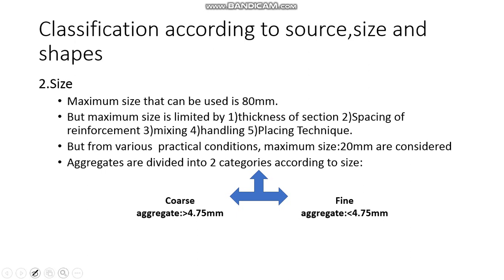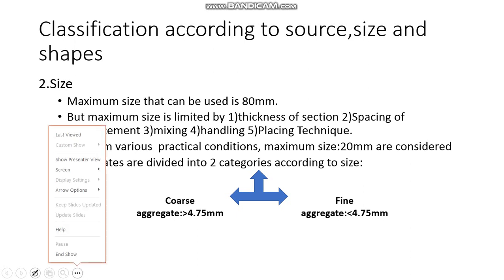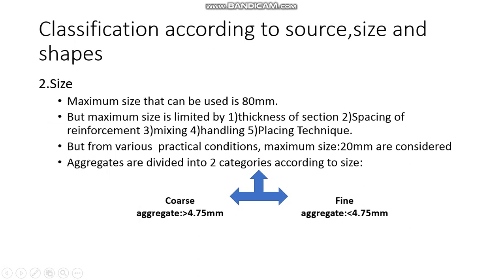This is very important: classification of aggregates according to size. The maximum size of aggregate that can be used is 80 mm — that is 8 cm in diameter, which is quite large. The maximum size is limited by the thickness of the section, spacing of reinforcement, mixing, and handling.